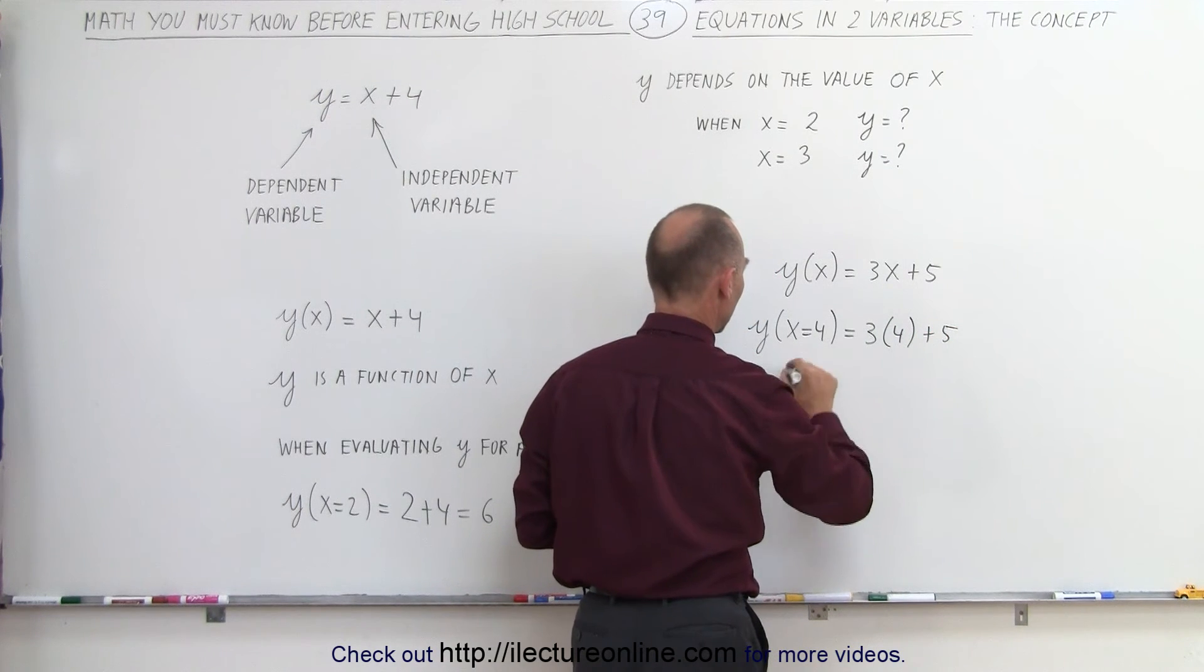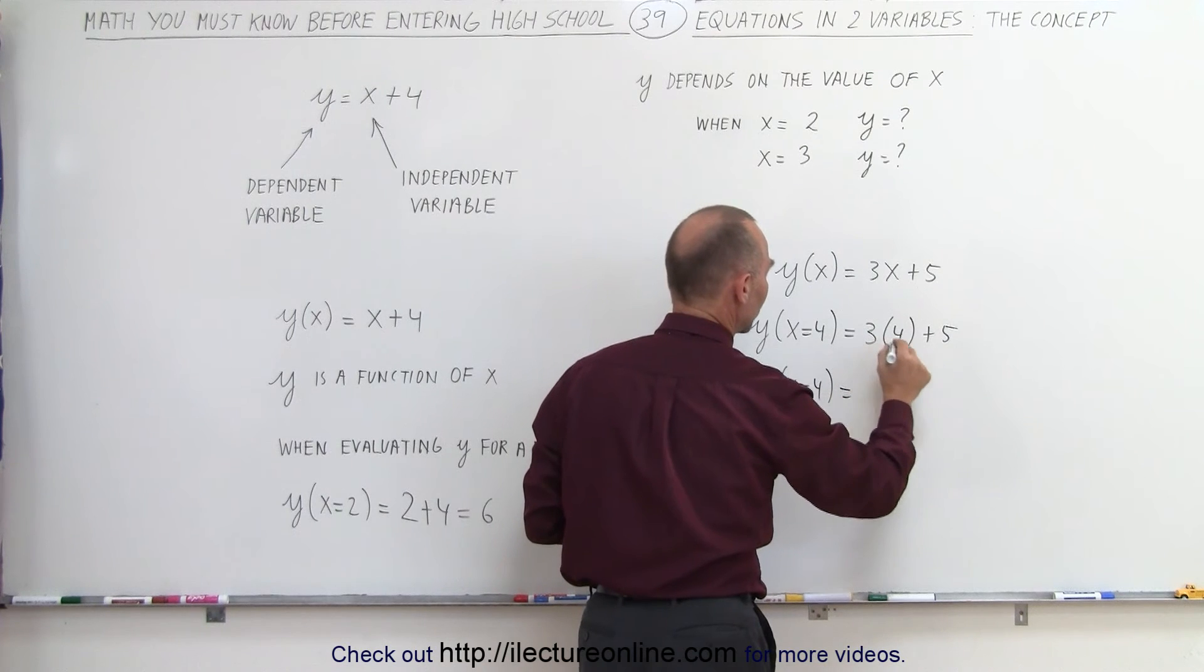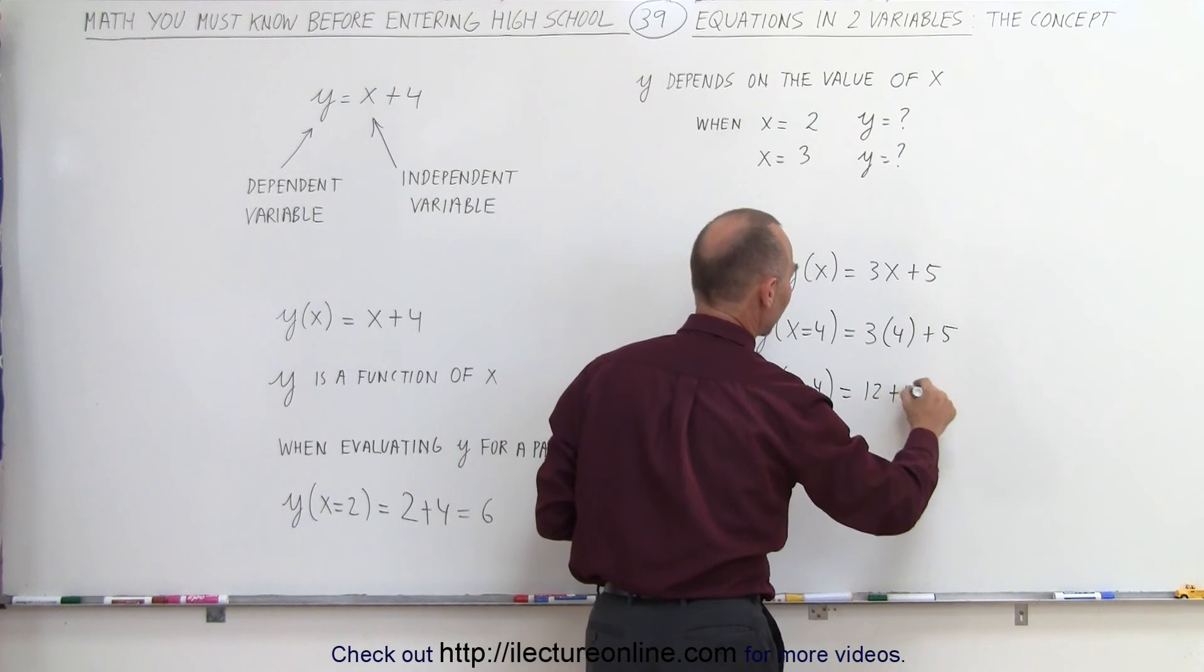So in other words, y, when x is equal to 4, is equal to 3 times 4, which is 12, plus 5. Or finally,